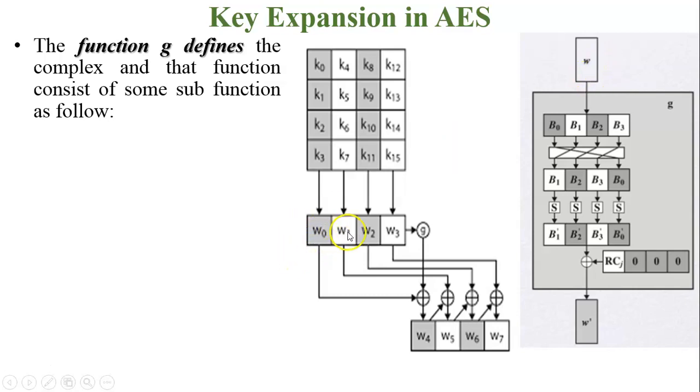This is w, meaning w0, 1, 2, 3. There are 4 words. This is the g function box over here, and this is w4, 5, 6, 7. So it generates from this using this g function.